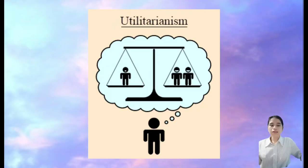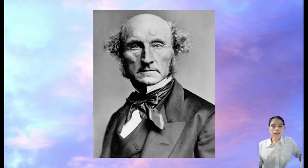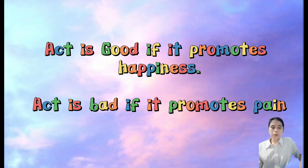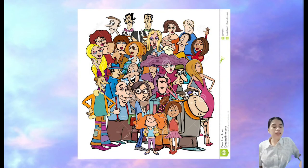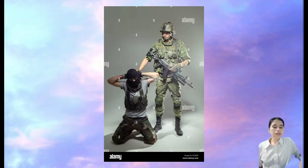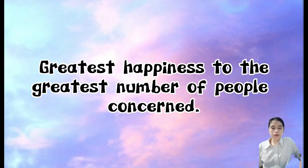Utilitarianism is an ethical theory founded by Jeremy Bentham and developed and popularized by John Stuart Mill. Founded on the principle of utility, it adheres to the belief that an act is good or morally right if it promotes happiness, and bad or immoral if it tends to produce pain. A utilitarian would not care whether an action is done out of deception, lies, or manipulation as long as it produces maximum benefits to many people, because the key principle of utilitarianism is happiness. For example, condemning a terrorist to death is morally right for the utilitarian, as this action produces the greatest happiness to the greatest number of people.